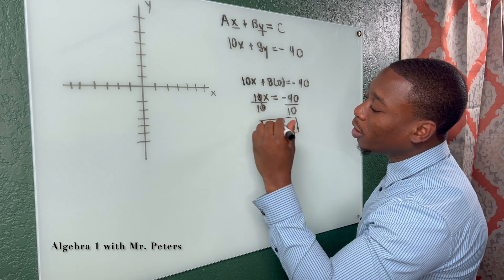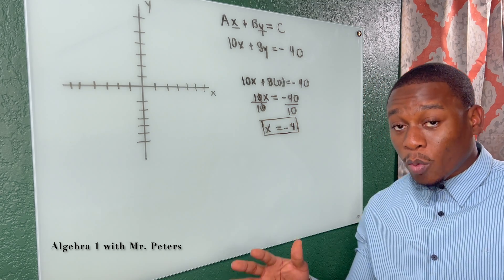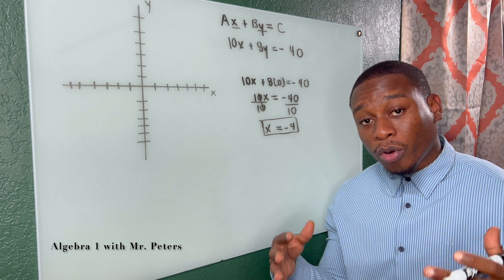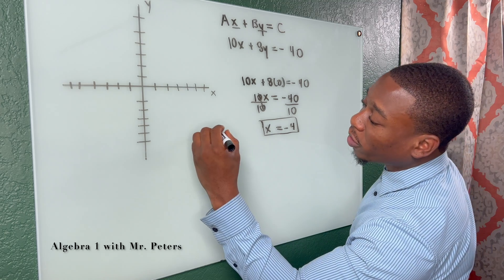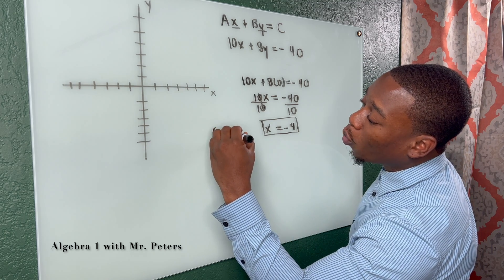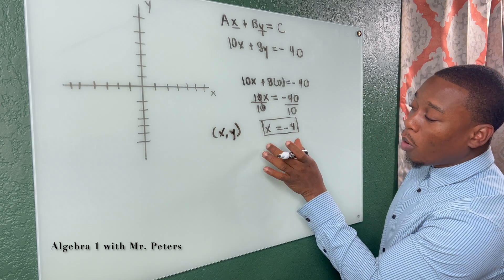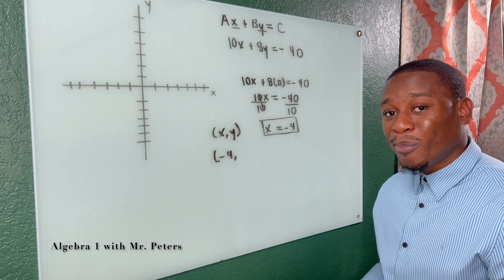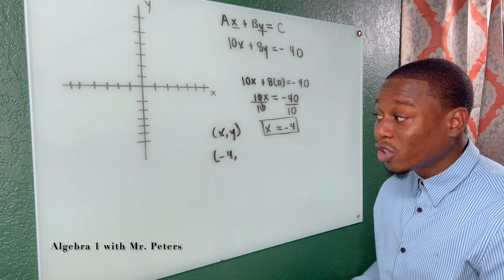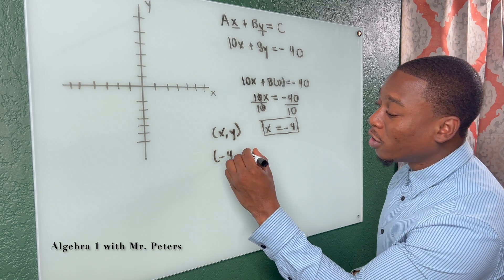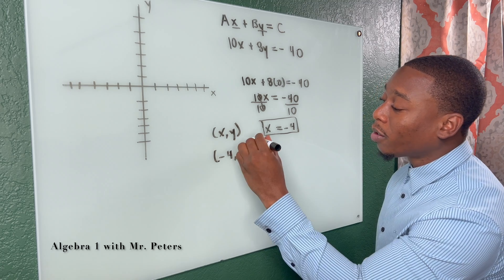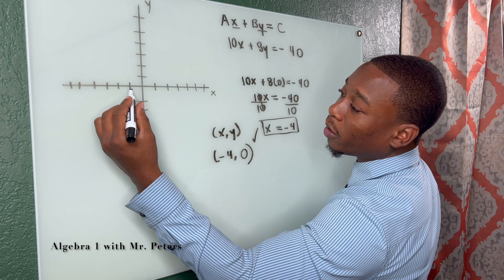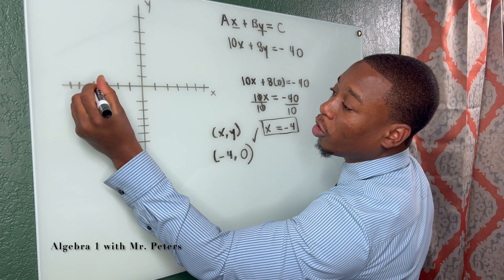But before we actually plot this point, there's something that we have to understand. This answer is part of an ordered pair. So we know ordered pairs are going to have an X and a Y value. So we know our X value is negative 4. And the Y value, remember, we substituted zero so we could solve for X. So this is going to be our X intercept, negative 4, 0, which will be right here. So here goes our first point.